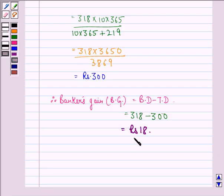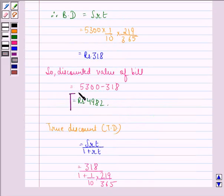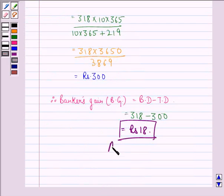So, our answer to the question is that banker's gain is Rs. 18 and discounted value is Rs. 4982. This is our answer to this question.